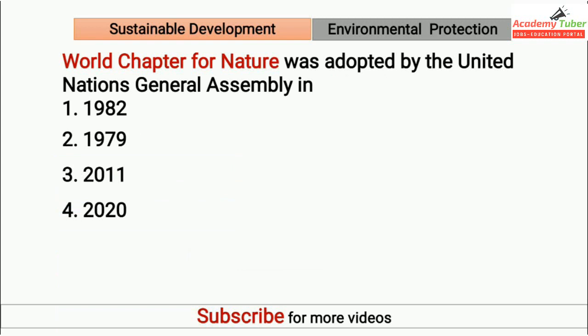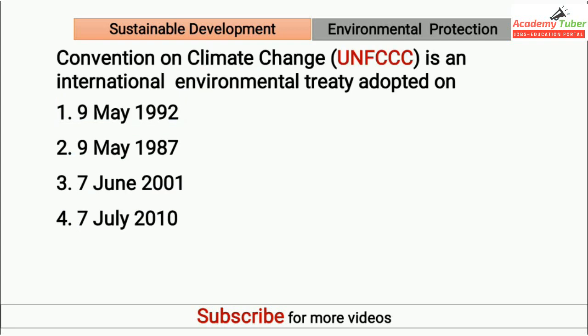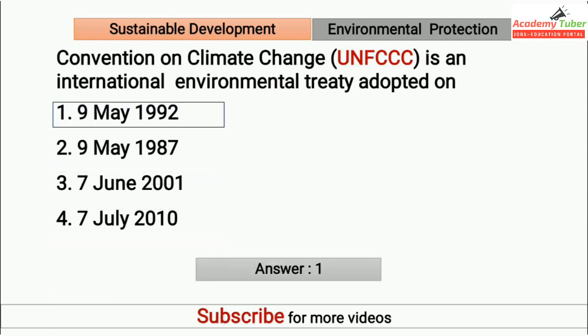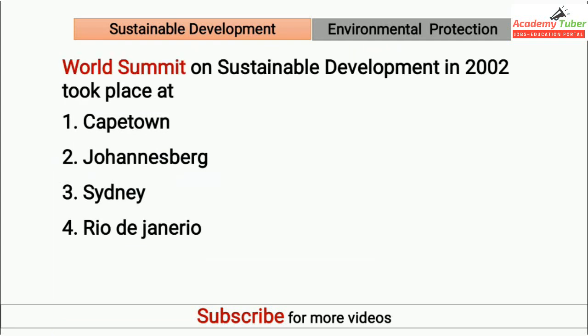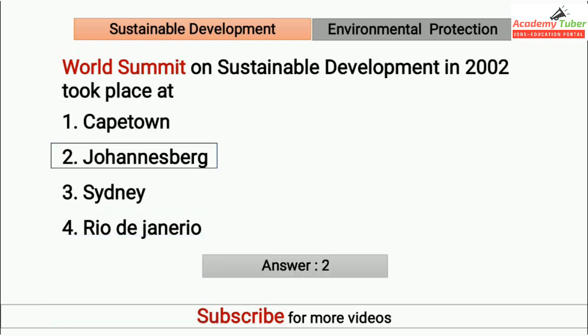World Charter for Nature was adopted by the United Nations General Assembly in? Answer is 1982. Convention on Climate Change is an international environmental treaty adopted on? Answer is 9th May 1992. World Summit on Sustainable Development in 2002 took place at? Answer is Johannesburg.